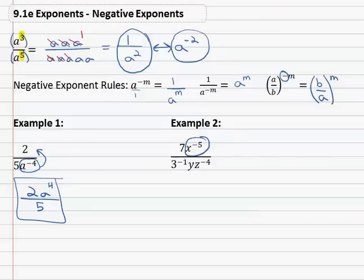X to the negative 5th is a negative exponent, it has to move down. Z to the negative 4th, that's a negative exponent, it's going to move up.